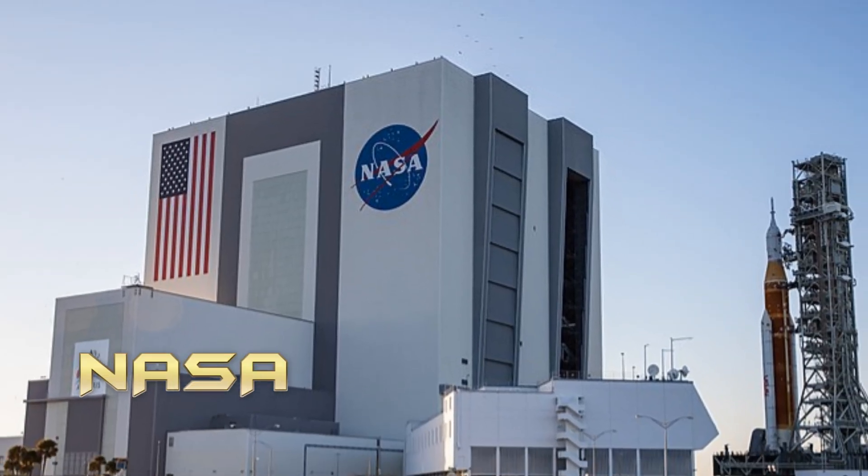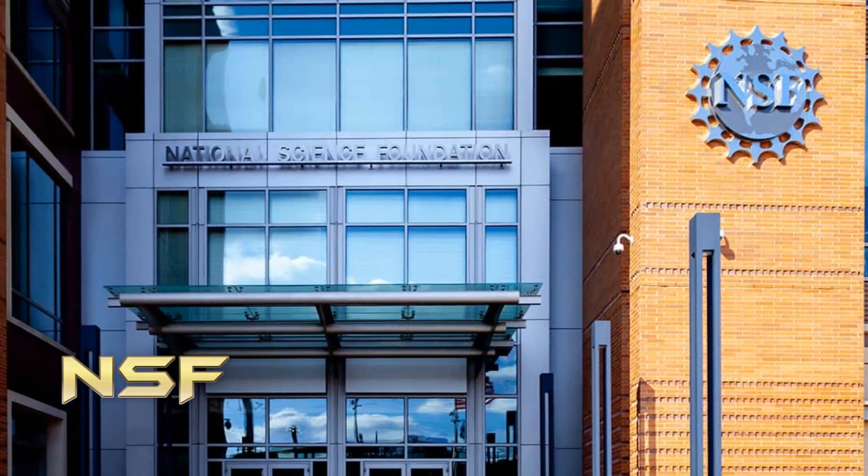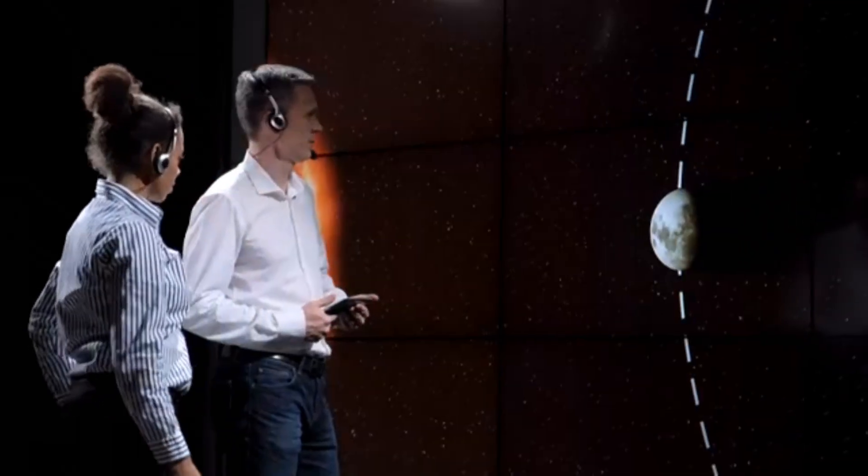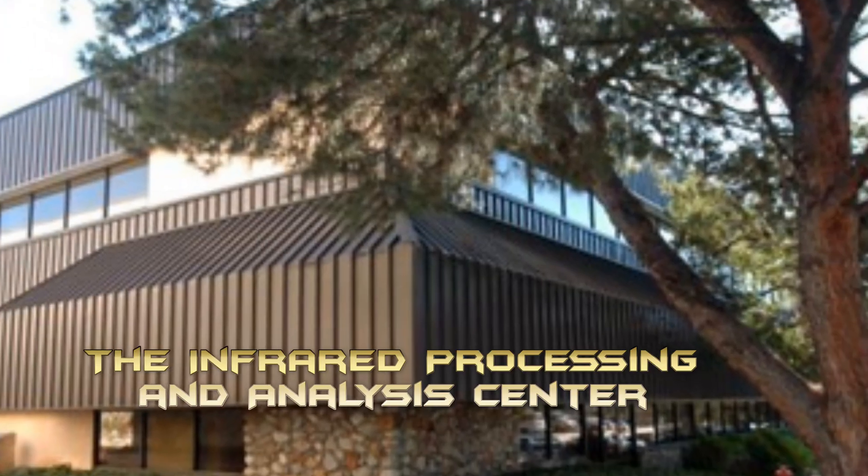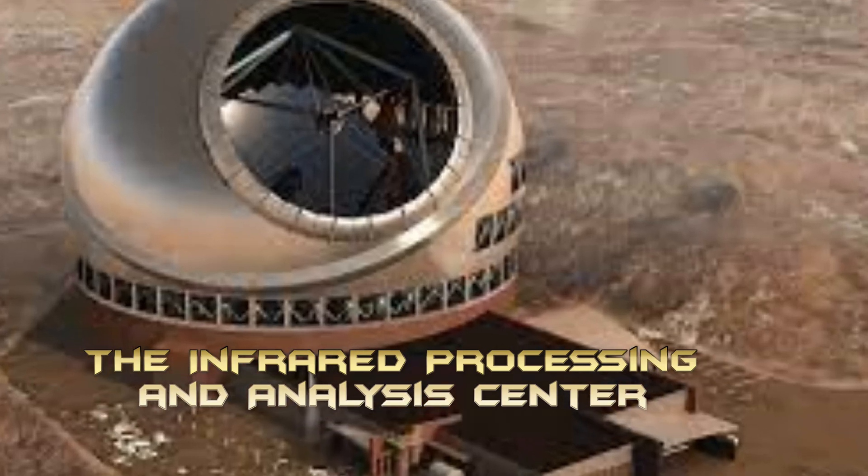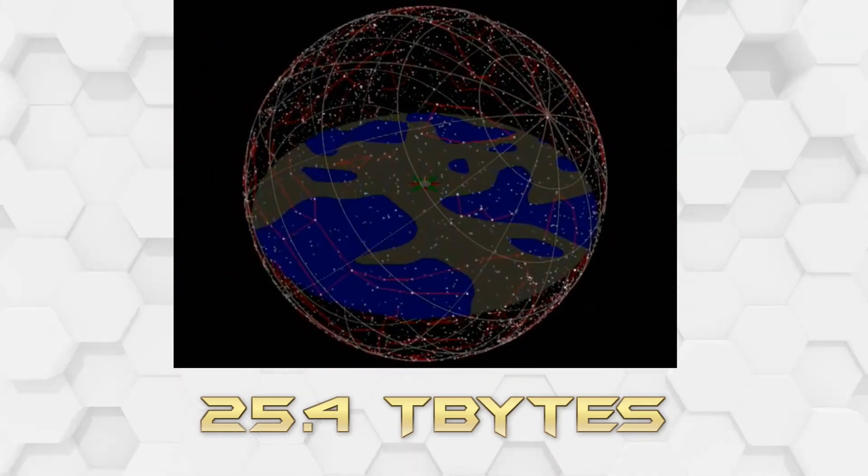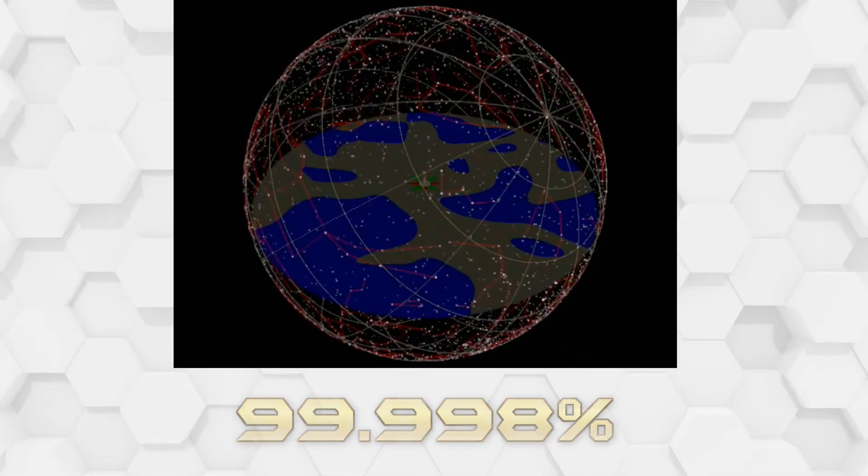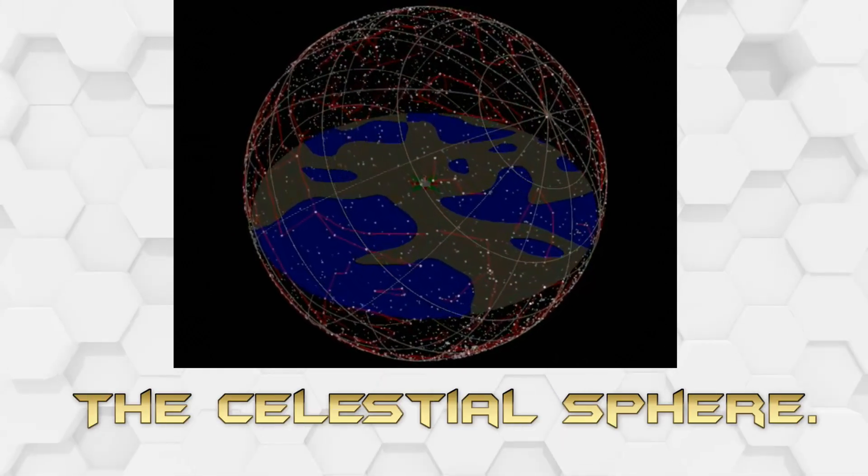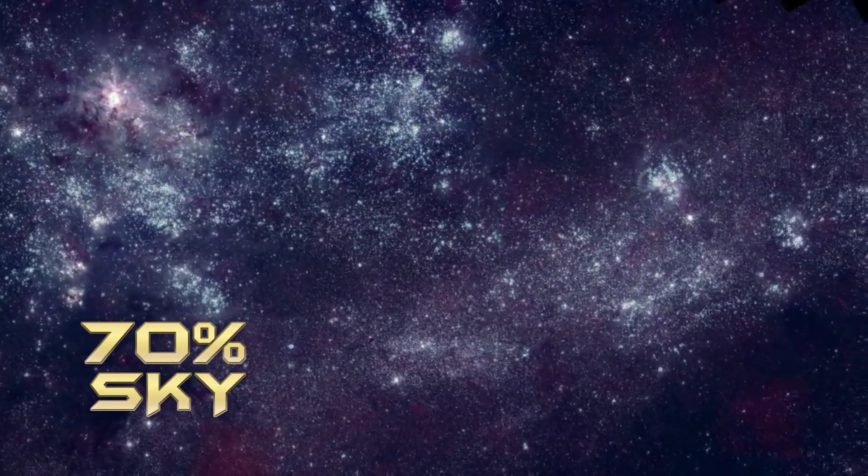Funding was provided by the National Aeronautics and Space Administration and the National Science Foundation. Over the course of this research, which was a joint project of the University of Massachusetts and the Infrared Processing and Analysis Centre, scientists collected 25.4 terabytes of raw imaging data, covering 99.998% of the celestial sphere. This efficient collaboration allowed scientists to learn about 70% of the sky.